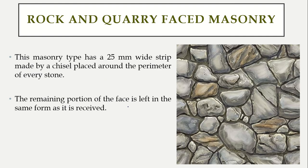Rock and quarry face masonry, as the name suggests, has a face that looks just as it comes from the quarry. In this type, a 25 mm wide strip is provided using a chisel around the complete circumference — the entire perimeter — of every stone. The remaining portion of the face is left in the same form as received from the quarry. You can see the gaps around every stone in the figure.